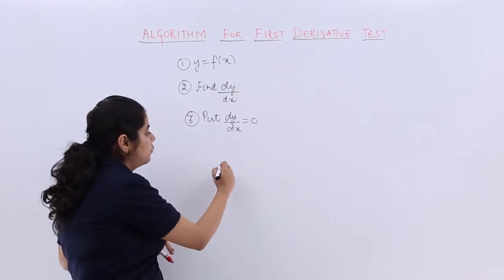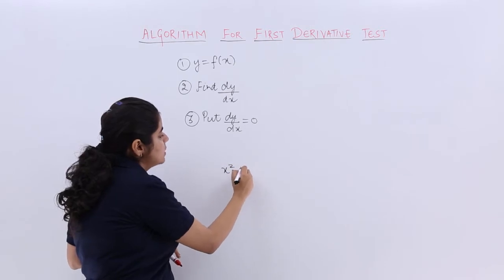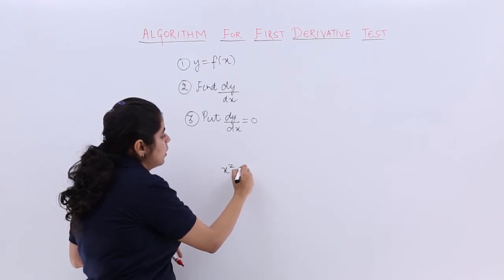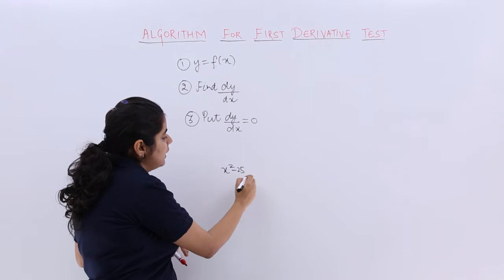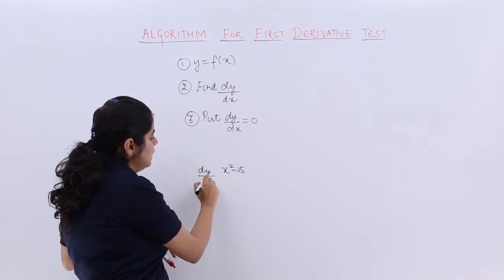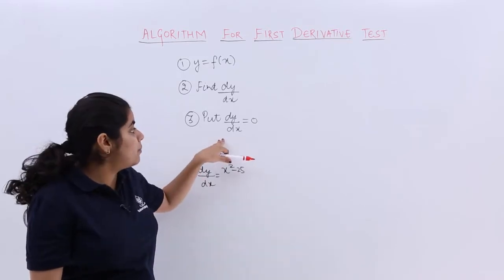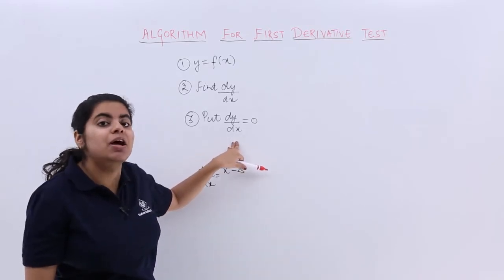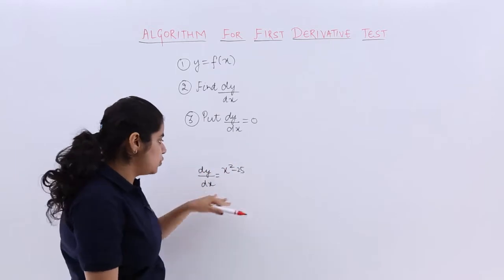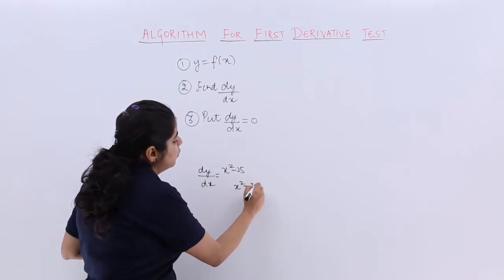That has come out to be my dy by dx - that is a very vague example, we're just taking one example. The step is to find out dy by dx and put it equal to zero. So you have found it out, now you have to put it equal to zero and then you'll be getting certain values.